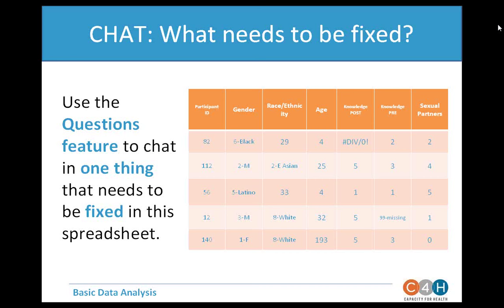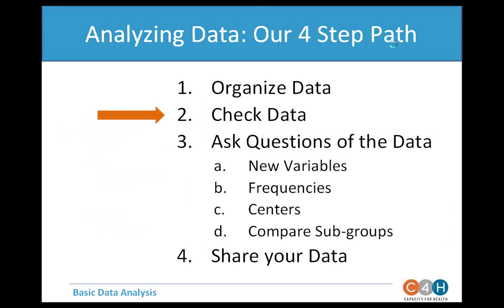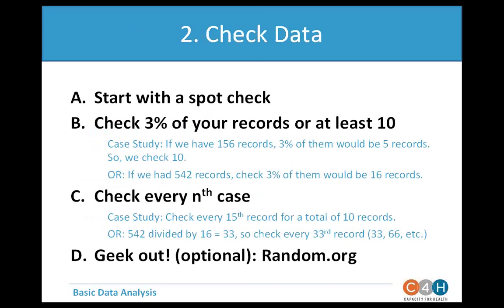Issues identified: in the first and third records, gender has been shifted left so race/ethnicity moved into the gender column and everything else followed — we've lost gender. There's also an Excel 'divide by zero' error message. We have '2M' and '3M' where male is coded with two different numbers. And finally, someone is listed as 193 years old — clearly not right. These are different problems easily visible with a spot check after data entry.